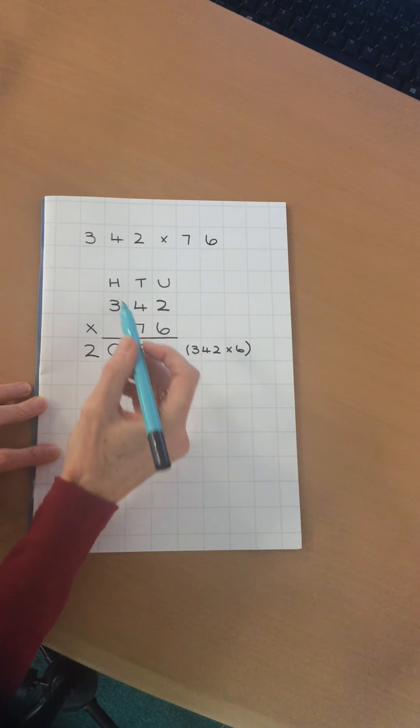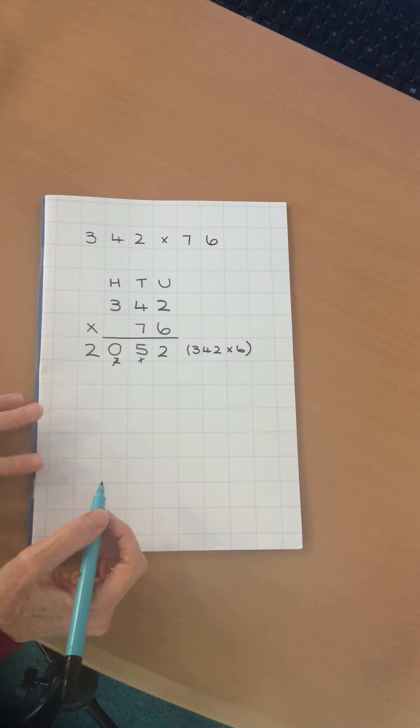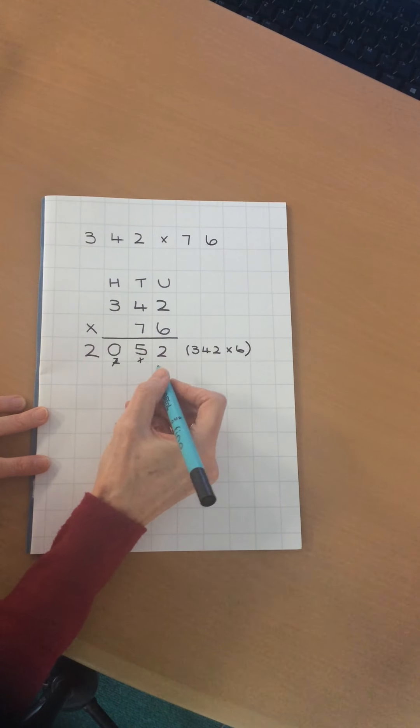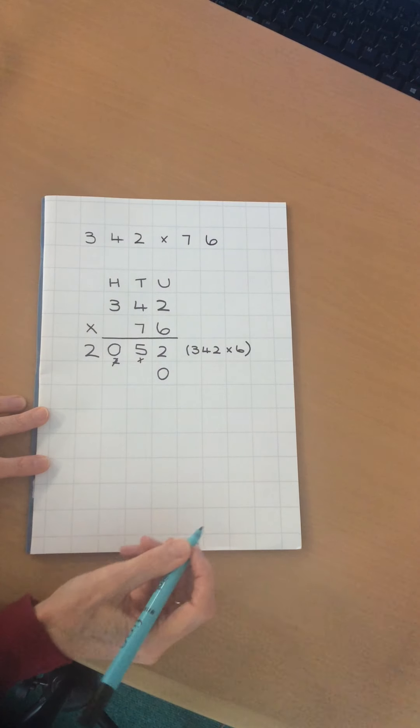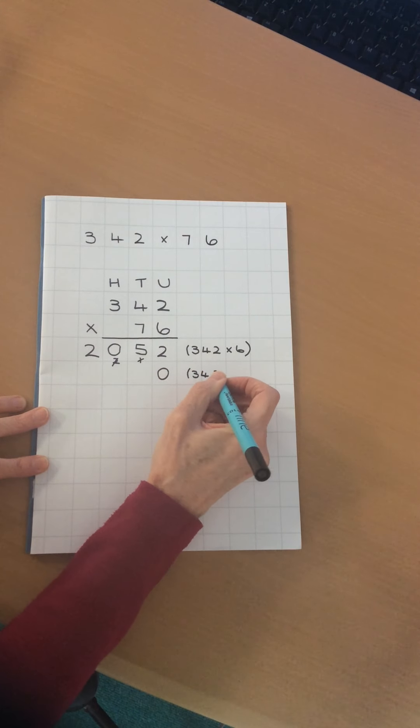Now I'm thinking about 342 multiplied by the 7. But of course the value of the 7 isn't just 7, it's 7 tens, which is 70, so I need to put my placeholder. That is really important. Then write in brackets what I'm multiplying, so that I don't forget, times by 70.